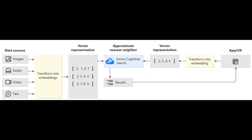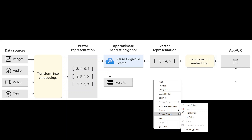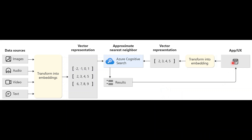So how is this done? We take the data source, transform it into embeddings, and these embeddings are pushed into Azure AI Search, which was previously called Azure Cognitive Search. When the app asks a question, it is transformed into an embedding and searched on Azure AI Search, and then the results are returned back to the app.